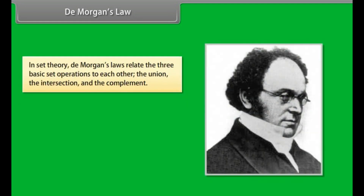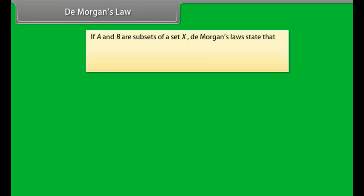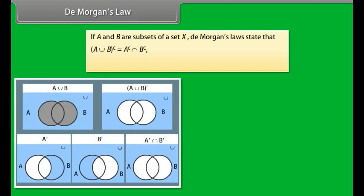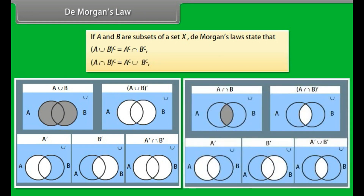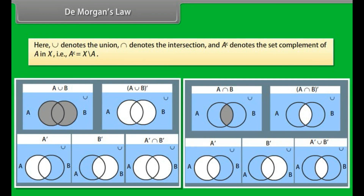De Morgan's Law. In set theory, De Morgan's Laws relate the three basic set operations to each other: the union, the intersection, and the complement. De Morgan's Laws are named after the Indian-born British mathematician and logician, Augustus De Morgan. If A and B are subsets of a set X, De Morgan's Laws state that: the complement of (A union B) equals the complement of A intersection the complement of B; and the complement of (A intersection B) equals the complement of A union the complement of B.